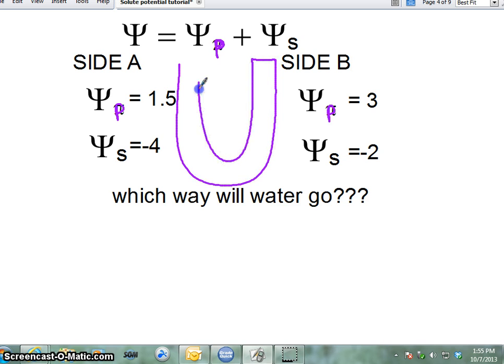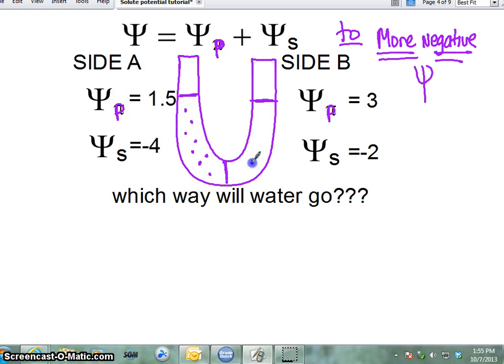And I'll remind you that water potential, water is always going to go towards the more negative water potential. Water will always go towards the more negative water potential. So if you're given this, our solute potential on the left is negative 4. And our solute potential on the right is negative 2. Which basically means that the left side is hypertonic compared to the right side. If solute was the only thing playing a role, which way would the water go? To the left, towards the more negative solute potential.